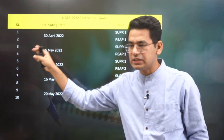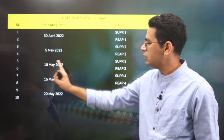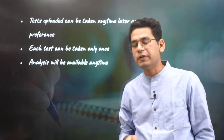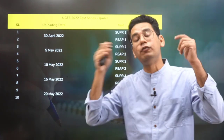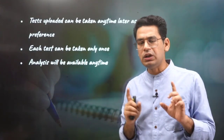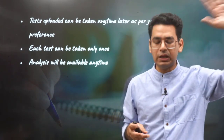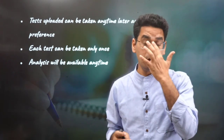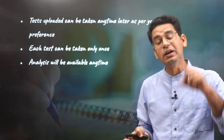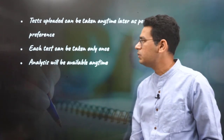The UG 2022 test series will work as follows: the first test will be uploaded on 30th April or 1st May — you will get Super 1 and REAP 1. Then tests on 5th May, 10th May, 15th May, and 20th May. Tests uploaded can be taken anytime later as per your convenience — there is no compulsion to take it on the upload date. You can take any of them at any later point in time. However, each test can be taken only once. The analysis will be available anytime so you can watch it whenever you like.